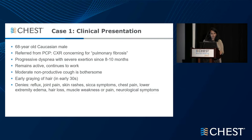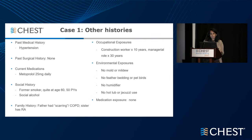We have a 68-year-old Caucasian male referred because a chest X-ray was concerning for pulmonary fibrosis. He has progressive dyspnea with severe exertion for the last eight to ten months, remains active, has continued to work, has moderate non-productive cough, reports early graying of hair in his early 30s, denies any reflux symptoms or symptoms suggestive of autoimmune disease — joint pain, skin rashes, sicca symptoms, hair loss, muscle weakness, no chest pain or lower extremity edema. He has a history of hypertension, is on metoprolol, is a former smoker who quit at age 60 with a 50 pack-year smoking history, and occasional alcohol use.